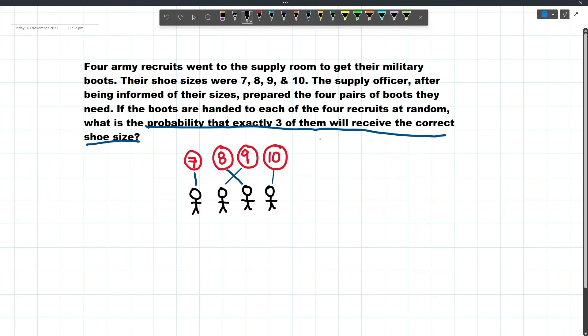So our answer here will be 0. This is the probability that exactly 3 received the correct shoe size, and so this is what we need.